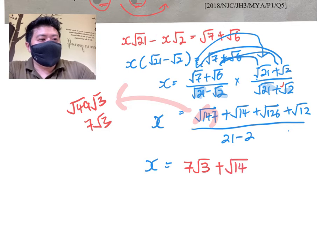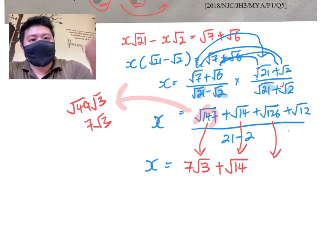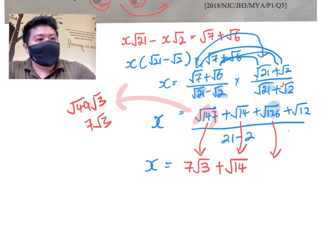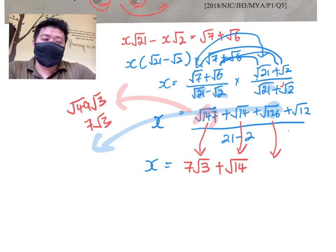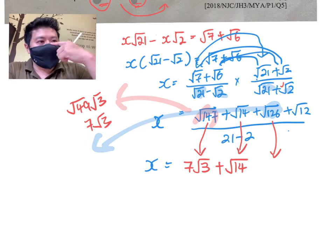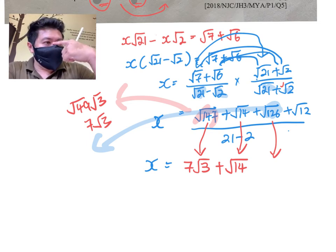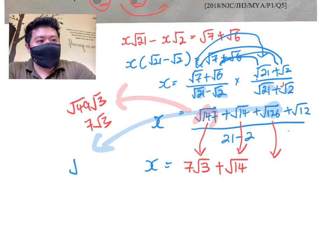Now √126—I just want to bring to your attention that √126 can also be written as a multiple of 3, or in fact it's a multiple of 14. So I can write it as √14 times √9.